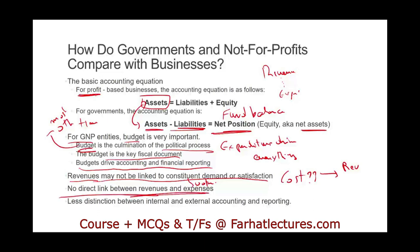In government, you set expenses first and then try to raise revenues. In theory, you want to break even because the government is not there to make a profit — they just want to earn enough to cover their services. Also, in government and not-for-profit, there is no distinction between internal and external accounting. There is only one set of accounting, and the main reason for governmental accounting is to hold the organization accountable to the constituents.